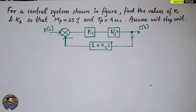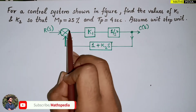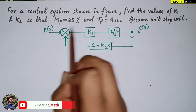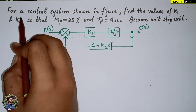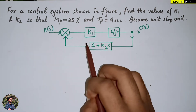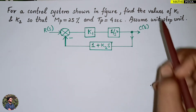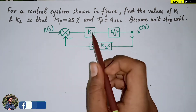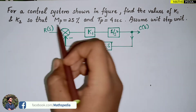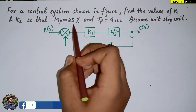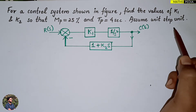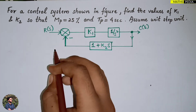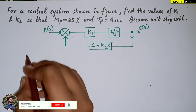In this video we are solving a problem based on transient specifications - Mp, tp, and related terms. For the control system shown in the figure, we need to find the values of k1 and k2 such that Mp is 25% and tp is 4 seconds. Assume unit step input.